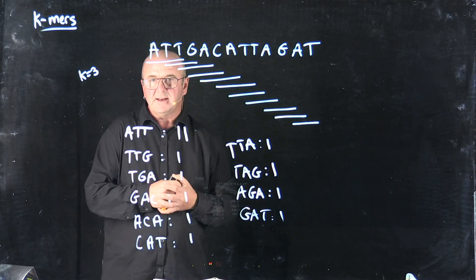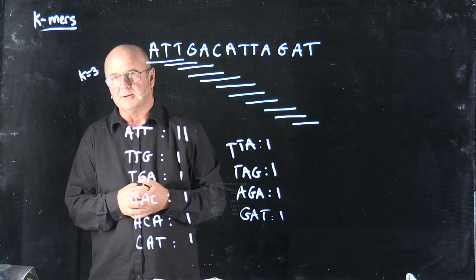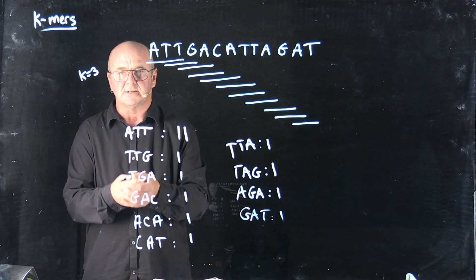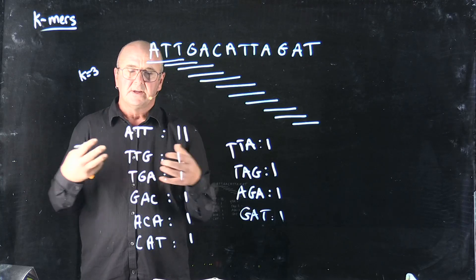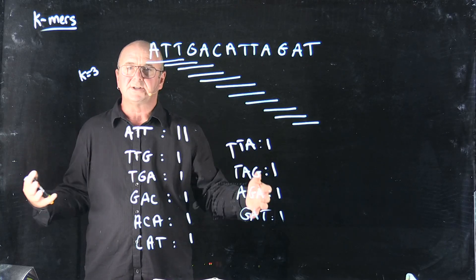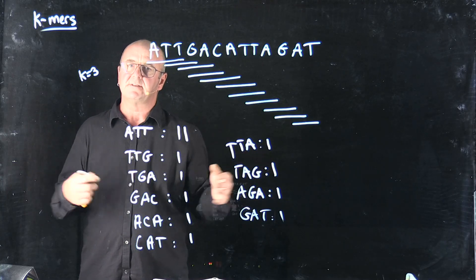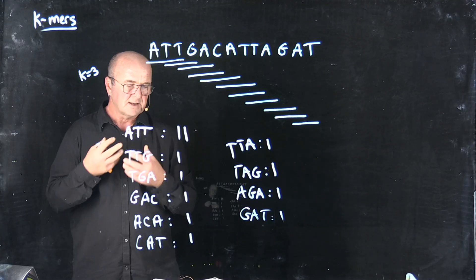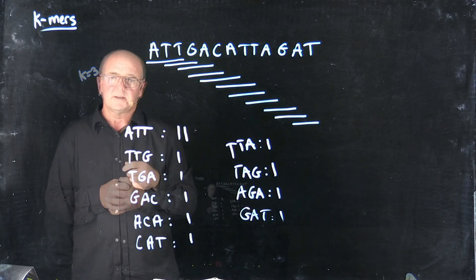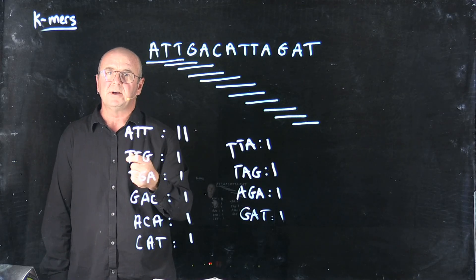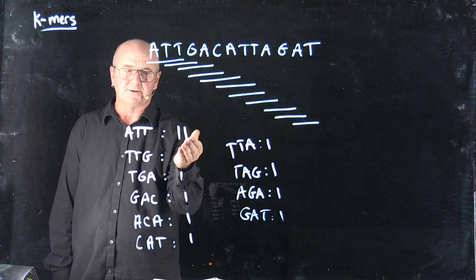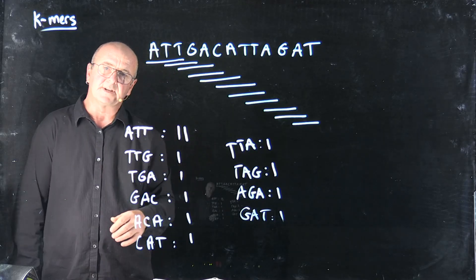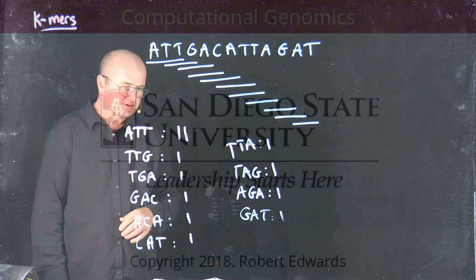But as K gets bigger, your dictionary gets a lot bigger, and the other problem is it's really slow — especially if you're working with large next-generation sequencing, high-throughput sequencing datasets like we use nowadays. So can we come up with a better approach than just storing the data in a dictionary?